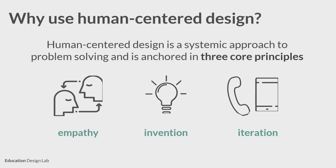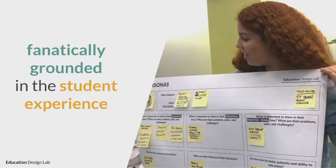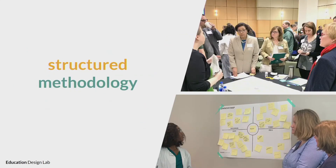There are three core principles of design thinking: empathy, invention, and iteration. When we think about empathy and the work for community colleges, we really believe that design thinking helps us be fanatically grounded in the student experience — we want to be able to design for the student experience. A lot of times at colleges there's this traditional mental model of designing to optimize for operational efficiency, but how does that impact the student experience? So we want to start to rethink about how what we do can really ground us here. Design thinking also has a structured methodology — there is a page in your packet and we're going to dive into it.